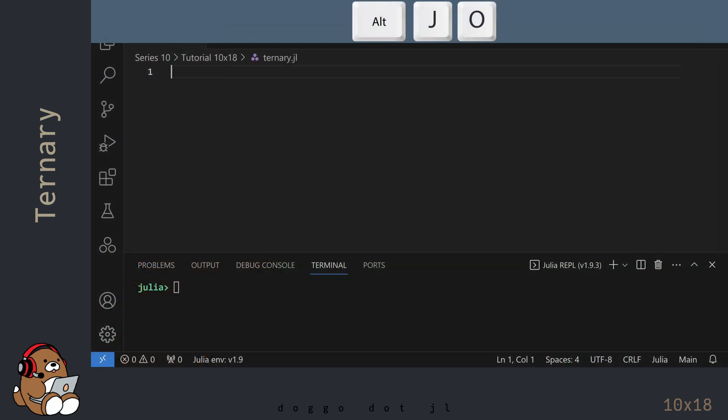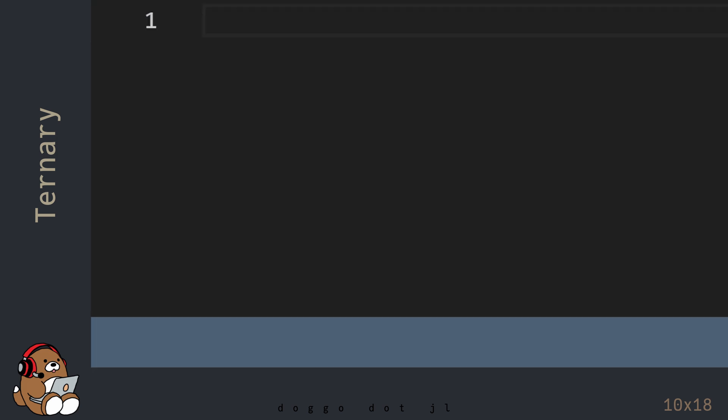I'm in VS Code and I've already created a new .jl file, and I've also launched the Julia REPL by using Alt-J, then Alt-O. Let's start by setting up the same three conditions and the same three tasks that we used in the last chapter.